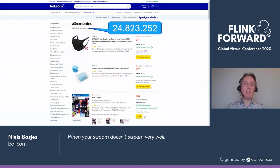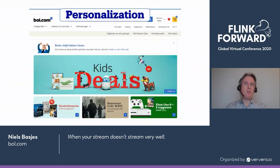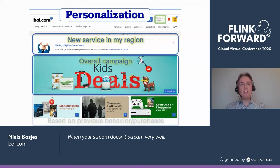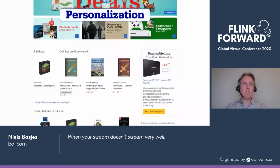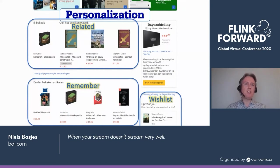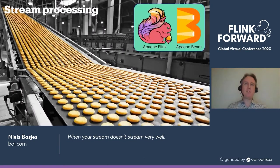One of the things we do with the data we gather from our platform is personalization. Depending on who you are, we may show you a service we just opened in your region, an overall campaign, some personalized campaigns based on stuff you've done before, or things you looked at. Because we want to do that as fast as possible in response to what the customer is doing, we do quite a bit of stream processing using both Apache Flink and Apache Beam.